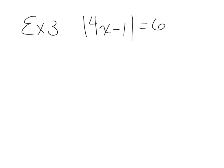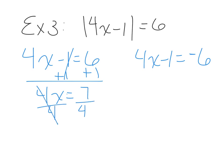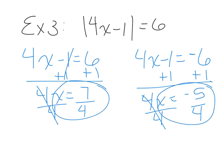Example 3: solve the absolute value of 4x minus 1 equals 6. We set up two equations: 4x minus 1 equals 6, and 4x minus 1 equals negative 6. For the first, add 1 to get 4x equals 7, then divide by 4: x equals 7 over 4. For the second, add 1 to get 4x equals negative 5, then divide by 4: x equals negative 5 over 4. Both are correct solutions.